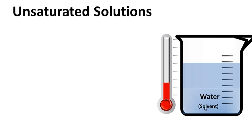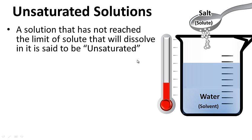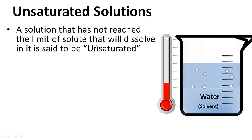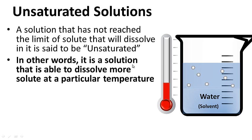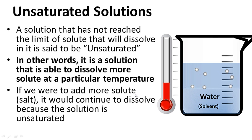Unsaturated solutions: a solution that has not reached the limit of solute that will dissolve in it is said to be unsaturated. In other words, we could add more salt and more will dissolve. It is a solution that is able to dissolve more solute at a particular temperature. If we were to add more solute, it would continue to dissolve because the solution is unsaturated — it can hold more solute.